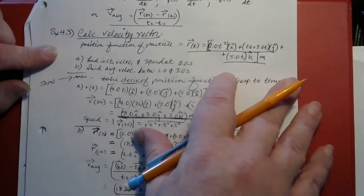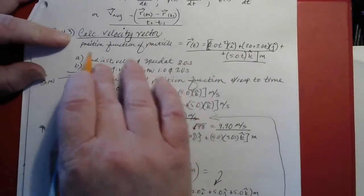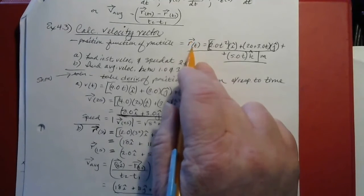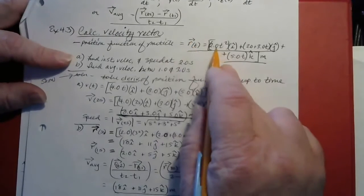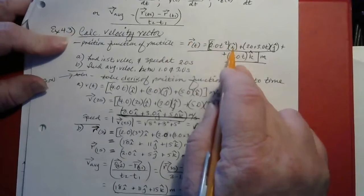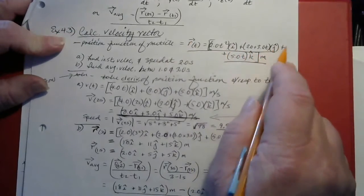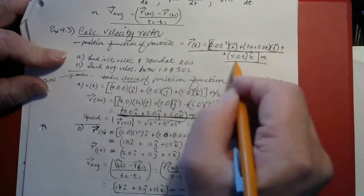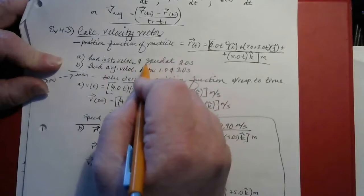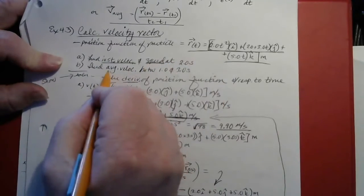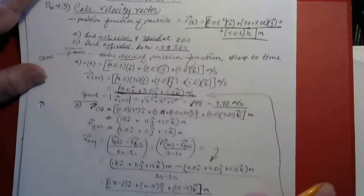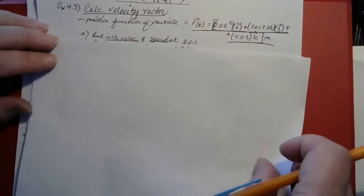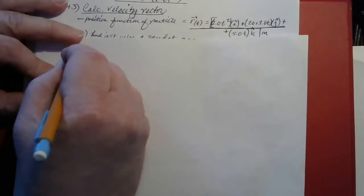A better way to do this would be to show an actual example — calculating a velocity vector. If you have a particle with a position function given by vector r as a function of time equal to 2t squared times unit vector i, plus (2 + 3t) times unit vector j, plus 5t times unit vector k, what we want to do is find the instantaneous velocity and the speed at 2 seconds, and then find the average velocity between 1 and 3 seconds. The solution is to take the derivative of the position function with respect to time.